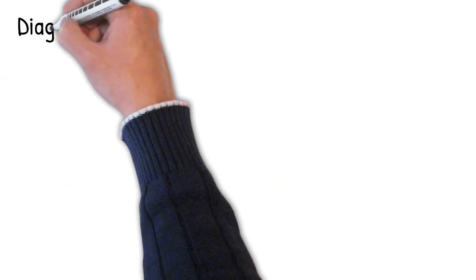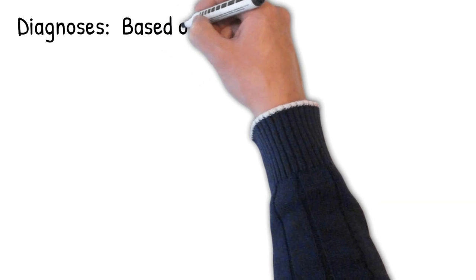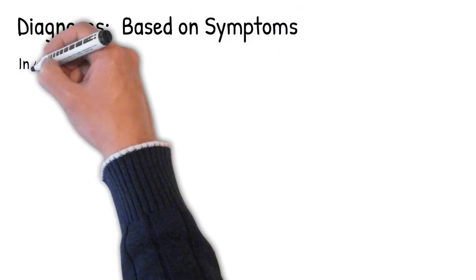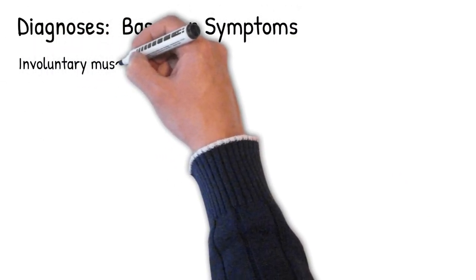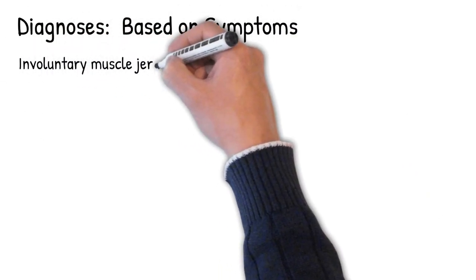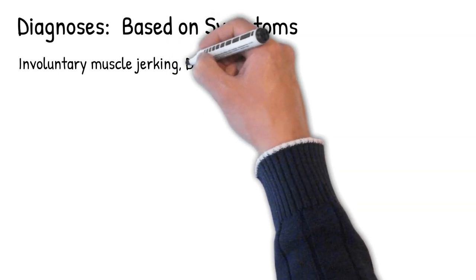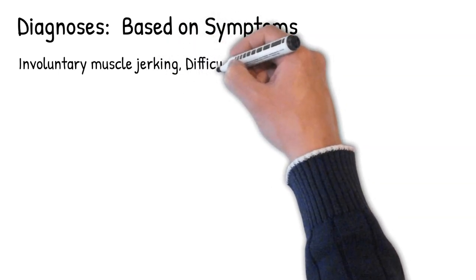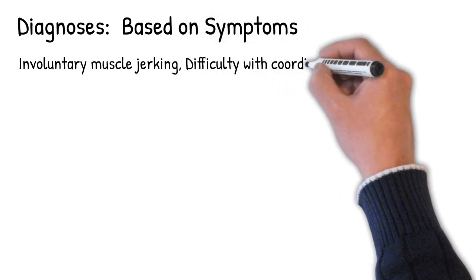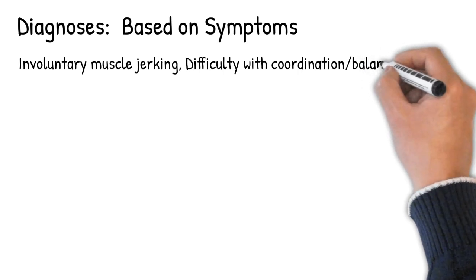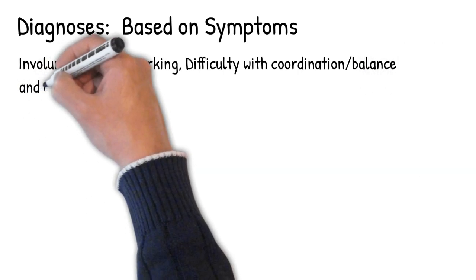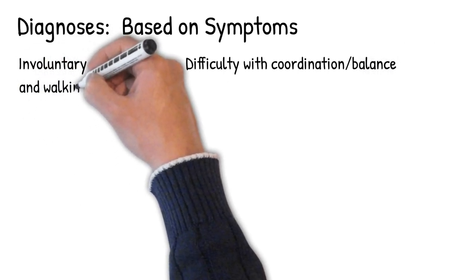Diagnosis is primarily based on symptoms of rapidly progressing dementia, particularly when accompanied by involuntary muscle jerking, difficulty with coordination and balance in walking, and visual disturbances. Further investigation includes electroencephalography and MRI imaging.